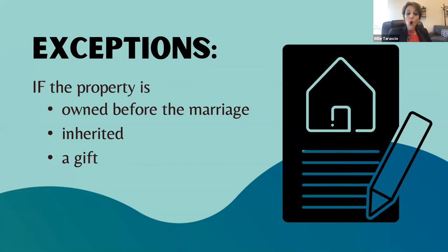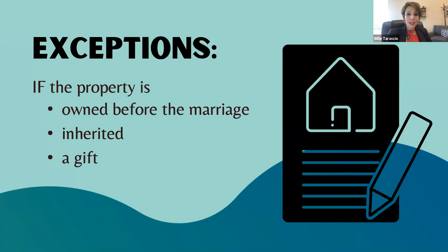Exceptions: If your property was owned before the marriage, then it is separate property. If your property is inherited, it is your separate property — it doesn't belong to the community. And if it's a gift, it is your separate property. Now, title doesn't matter. So if I go out and buy a car during the marriage and it's only under my name, the car still belongs to the community. It gets a little tricky with houses because when you are married and one person buys a house, the other person usually signs a disclaimer deed, disclaiming their interest — usually looked upon as a gift from the community to one spouse.